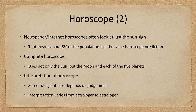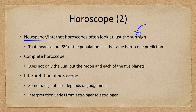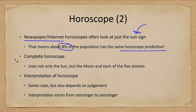When you look at a horoscope in a newspaper or online, you are looking at just one part of the full picture — the sun sign, meaning what constellation the Sun was in when you were born. This means that about 8% of the population shares exactly the same horoscope prediction.